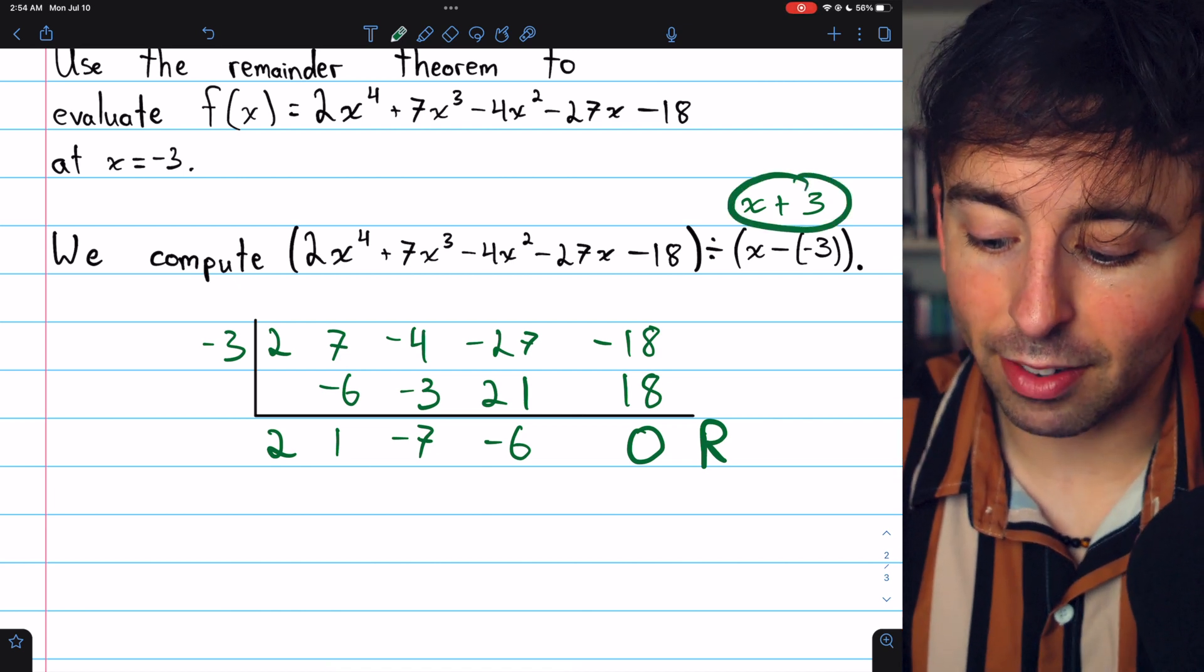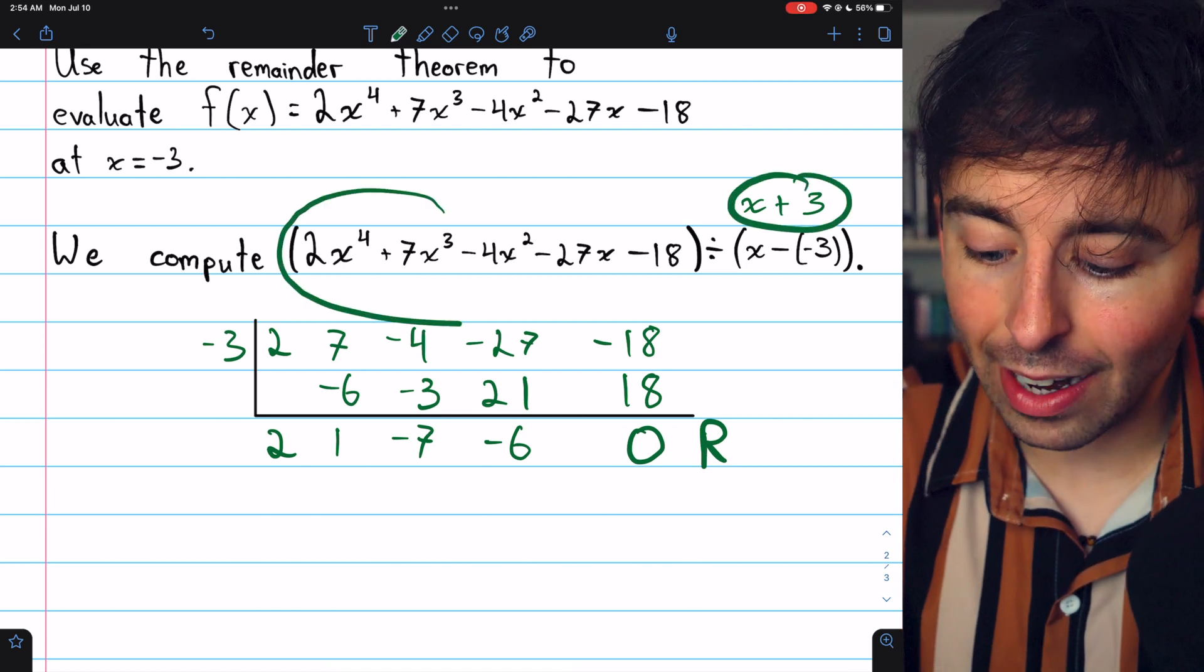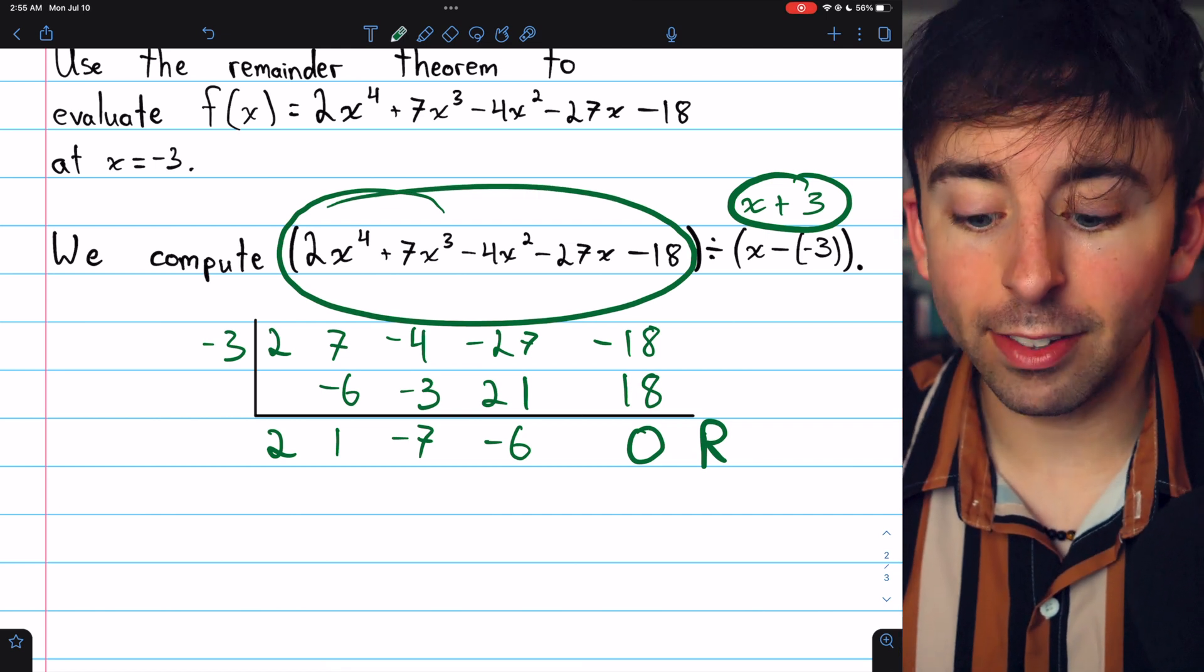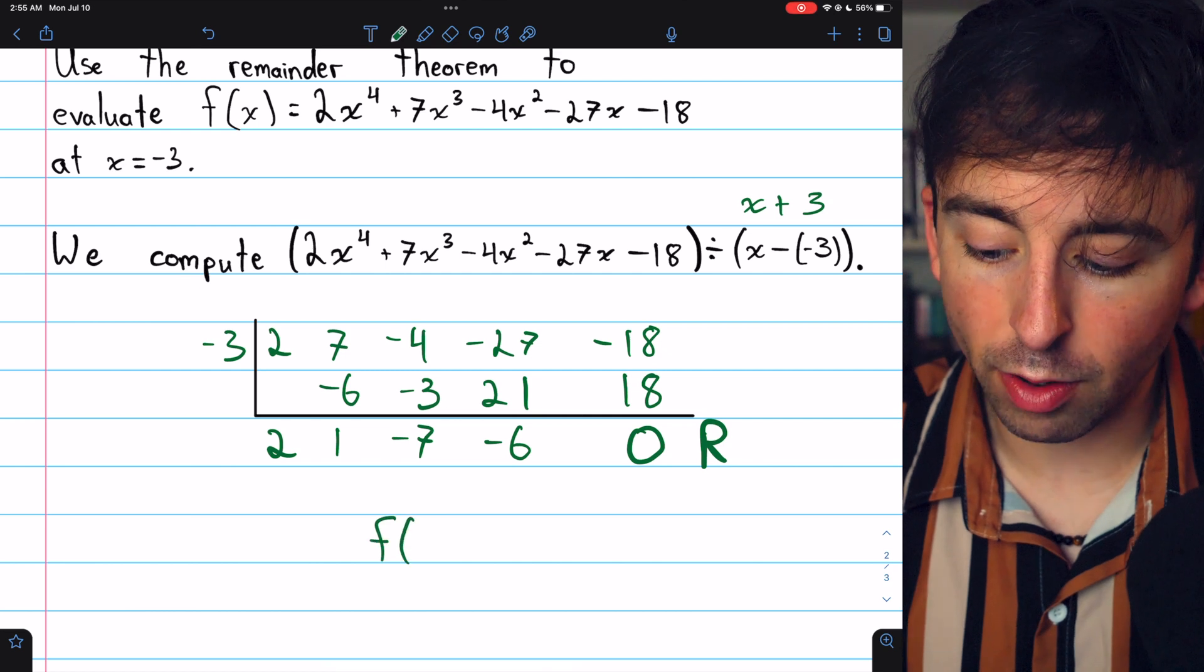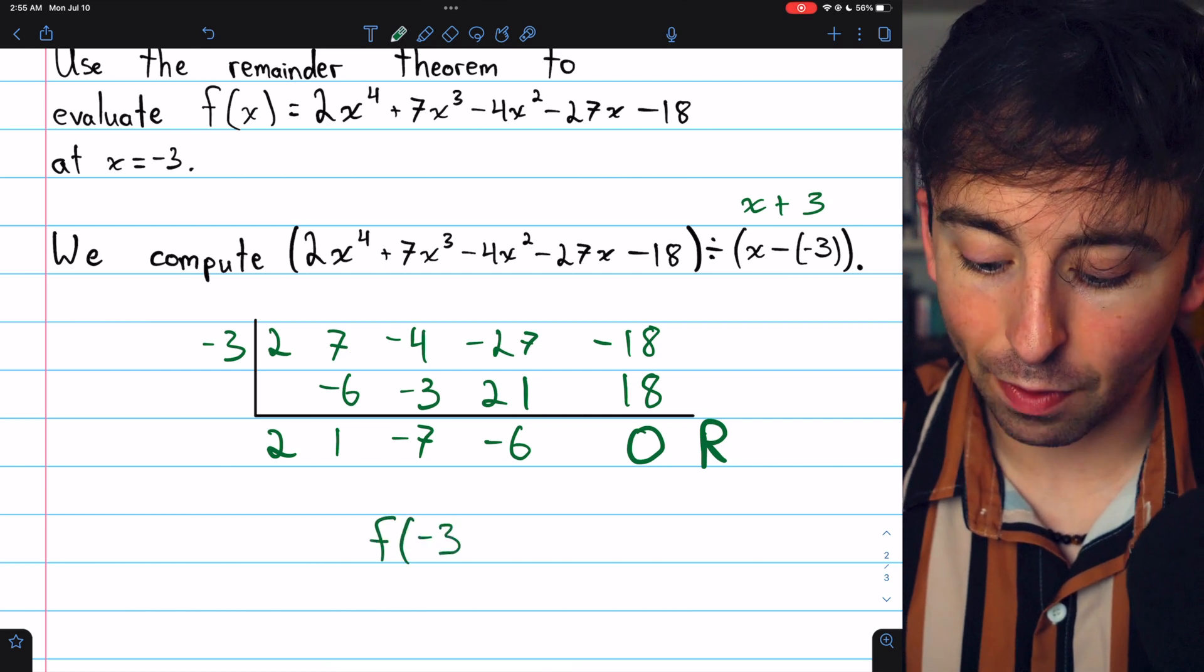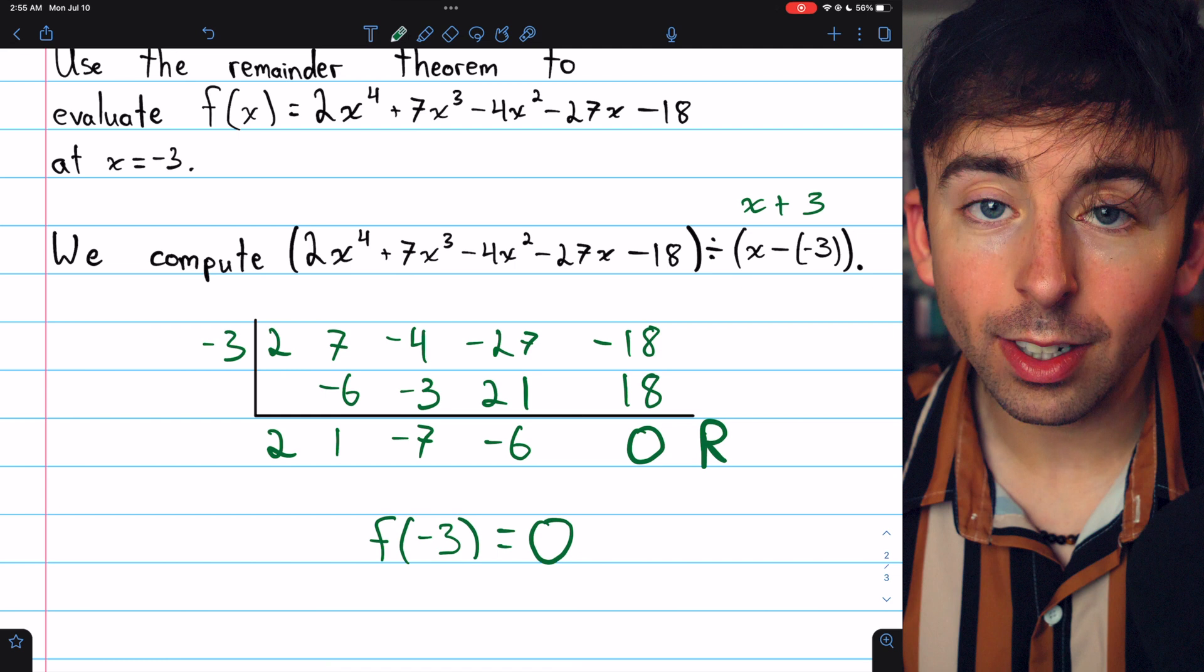So this means x plus 3 is actually a factor of this polynomial, since the division resulted in a remainder of 0. And that means that the function's value at negative 3 is equal to 0.